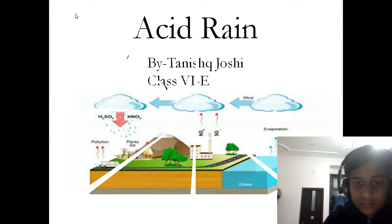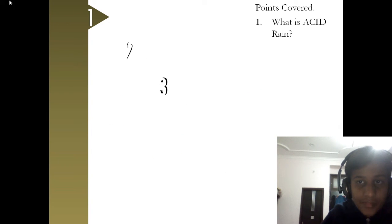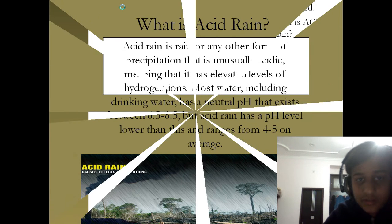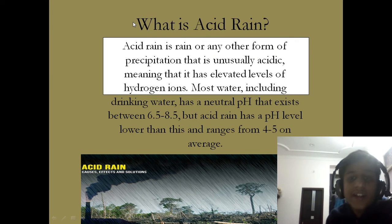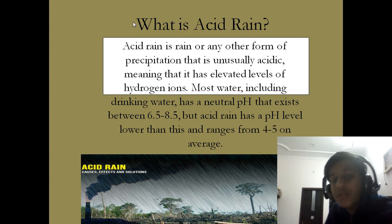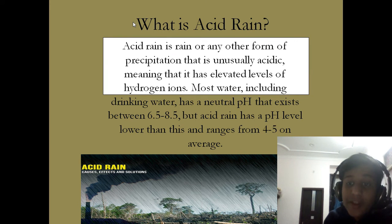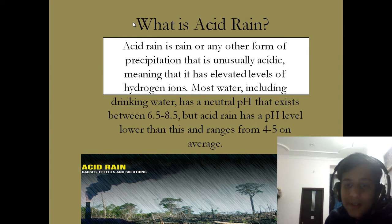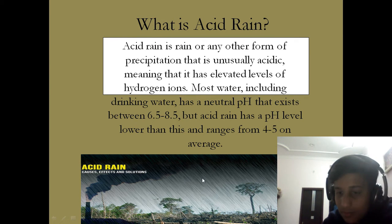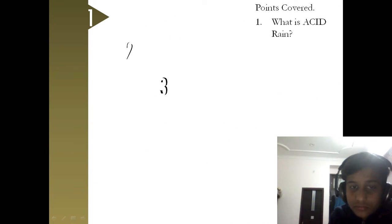Let's start. First, what is acid rain? Acid rain is rain or any other form of precipitation that is unusually acidic, meaning that it has elevated levels of hydrogen ions. Most water, including drinking water, has a neutral pH that exists between 6.5 to 8.5, but acid rain has a pH level lower than this and ranges from 4 to 5 on average.